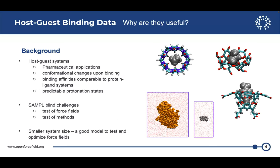Just some background about host guest systems. Why are they useful? The obvious reason is it's smaller than a protein ligand system. There are some similar chemistries involved in host guest binding. The binding affinities are comparable to protein ligand and some are even tidal binders. They are less ambiguous in terms of protonation states. And they've been used in SAMPL blind challenges as a test of force field and a test of methods.